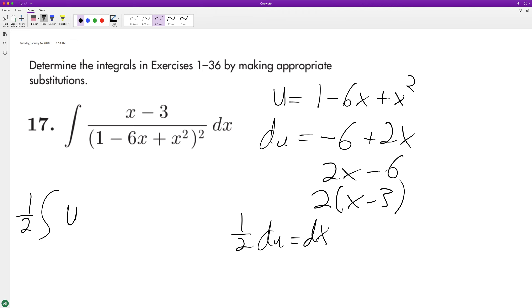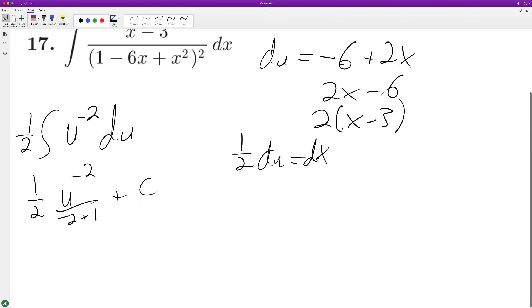So we have u raised to the negative 2 because 2 is on the bottom there, du. So we can go ahead and integrate this. We get 1 half u raised to negative 2 divided by negative 1 plus c.